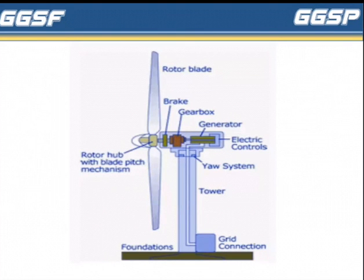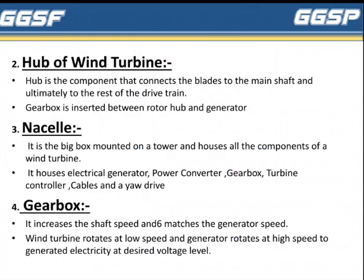Here is the diagram and parts of the wind power plant. Second part is Hub of Wind Turbine. The hub is the component that connects the blades to the main shaft and ultimately to the rest of the drivetrain. A gearbox is inserted between the rotor hub and the generator.